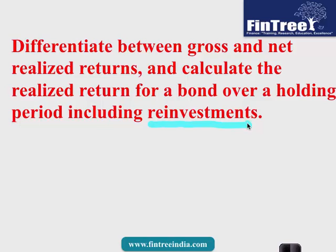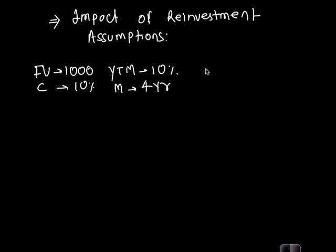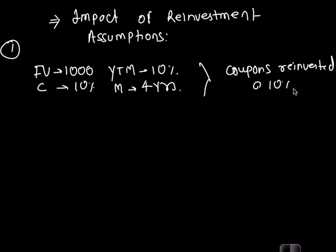Next heading in the notes: Impact of Reinvestment Assumptions. Let's say we have a bond with a face value of 1000, coupon rate 10%, YTM 10%, and maturity is 4 years. Let's make an assumption—this is scenario one—that all the coupons were reinvested at 10% itself. We are making a hypothetical assumption that all the coupons were reinvested at 10%, and we would want to know what would be the realized yield on these investments.